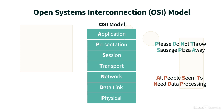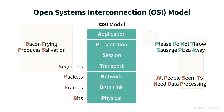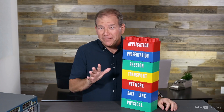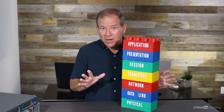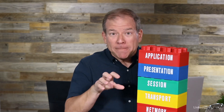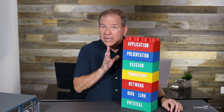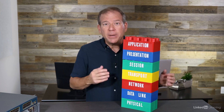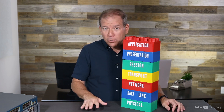A way to remember those different Protocol Data Unit names from the bottom up is the acrostic 'Bacon Frying Produces Salivation,' which stands for Bits, Frames, Packets, and Segments. The best advice about the OSI model is to remember: it's a reference model, not a reverence model. It doesn't have to be revered as something that every network component must neatly fit into — that's just not reality. However, this model can be a tool we use to better explain and understand where different network components reside.